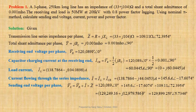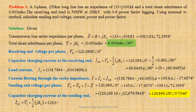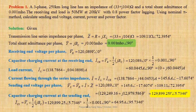Now we shall calculate sending-end capacitor charging current. ICS equals VS × (Y/2) equals VS × half of jBC. Using values we get 129,899.25 ∠ 5.7346° × half of 0.001 ∠ 90°, that gives us 64.95 A ∠ 95.7346°, which in Cartesian form is −6.49 + j64.625 amperes.